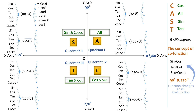Moving on to the 180−θ angle: since 180° is involved, the function does not change to its co-function, so all functions remain as they are. Only sine and cosec will be positive in this second quadrant; all remaining ones will be negative, giving the corresponding results.